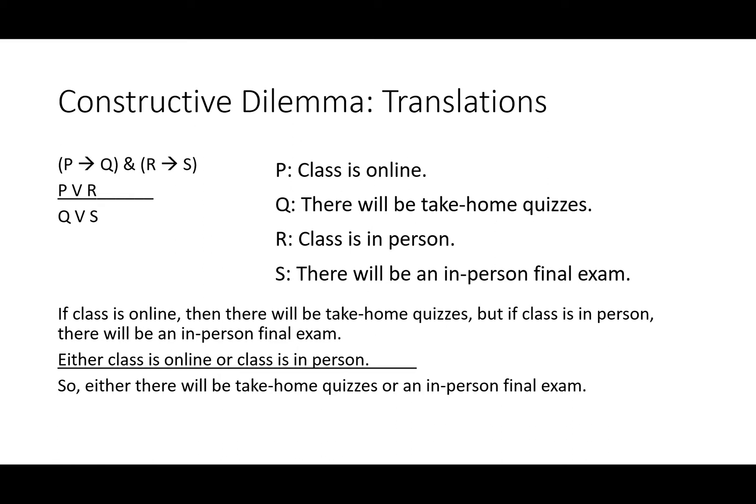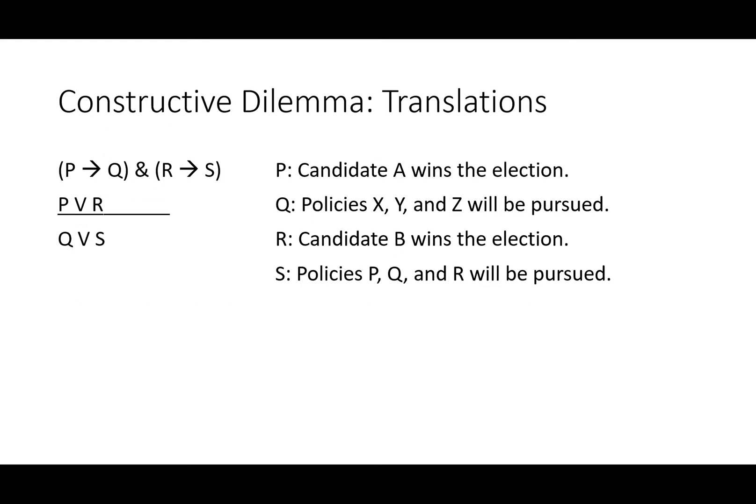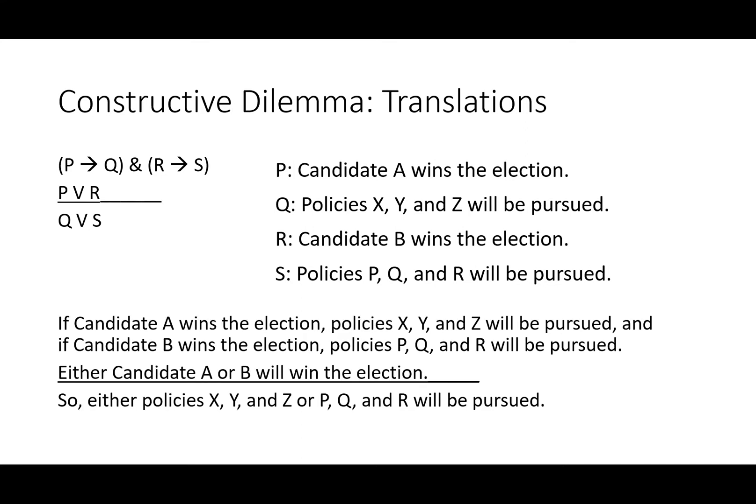Depending on what kind of examination or quiz you prefer, that might have had an input on your choice of online or in-person class. Finally, these are pretty useful when voting. Let's say if candidate A wins the election, then policies X, Y, and Z will be pursued. And if candidate B wins the election, policies P, Q, and R will be pursued. Either candidate A or B will win the election, perhaps no one else is running. So either policies X, Y, and Z, or P, Q, and R will be pursued. If you think of it that way, this set of policies versus that set of policies, you can strip away some of the things that you may not care about when it comes to deciding who to vote for.